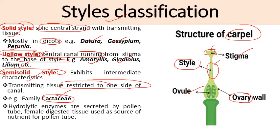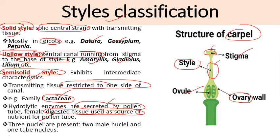There are some hydrolytic enzymes secreted by pollen grains or pollen tubes which digest the female tissue, and this digested tissue is used as a source of nutrients for the growth of the pollen tube. The pollen tube contains three nuclei: two male nuclei and one tube nucleus.